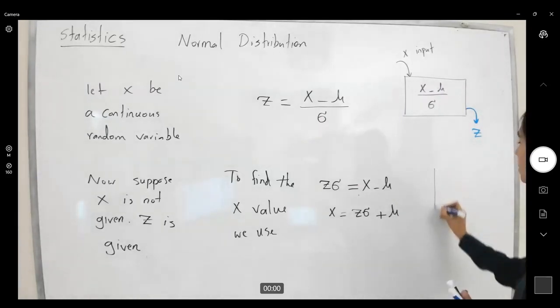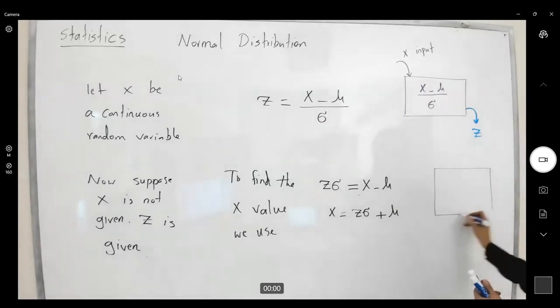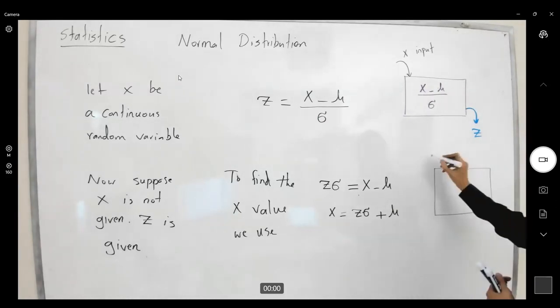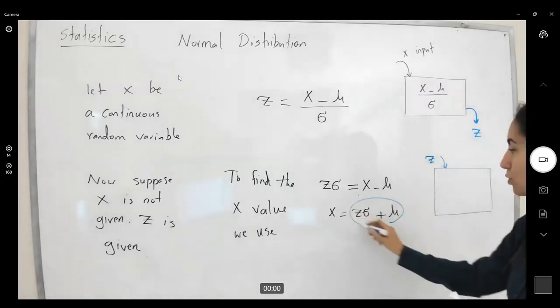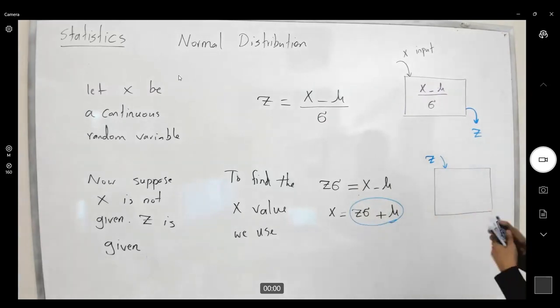Now you just enter your z-value. Z is the input, and the formula that you're going to use is z sigma plus mu, and it gives your x back. So you're going to get your x back as the output. This is your input and this is your output.